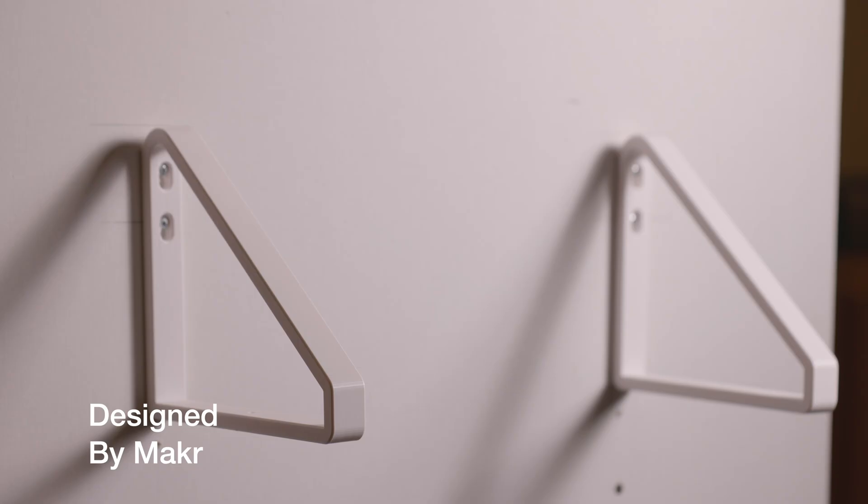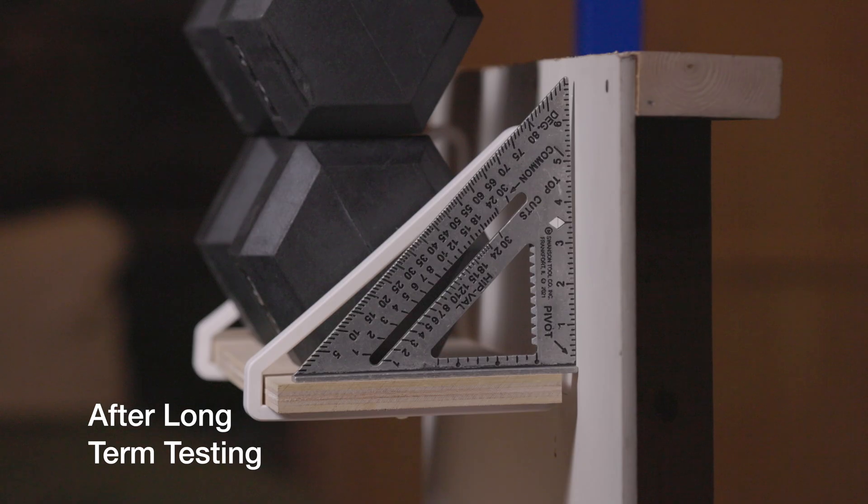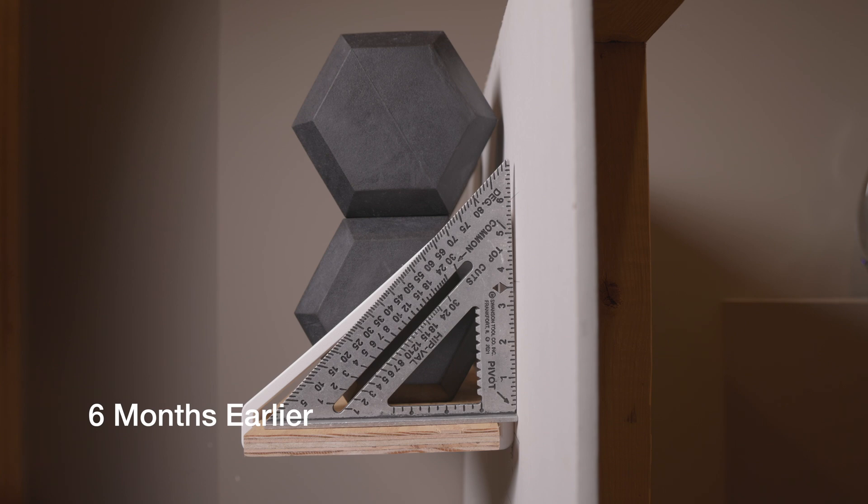The overhead bracket by Maker was also able to hold the weight. And with this design, we didn't see any deviation in how square it was to the wall. It's just as much out of square as it was six months ago.